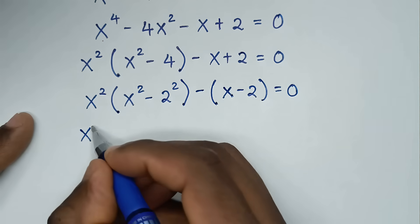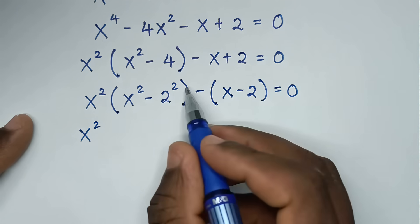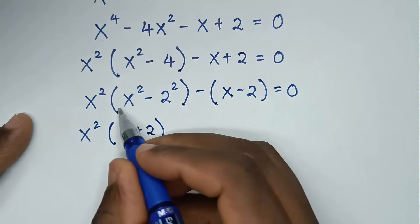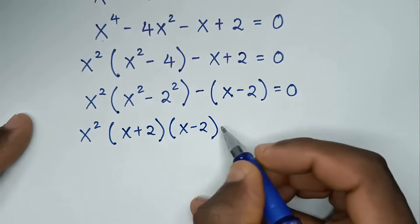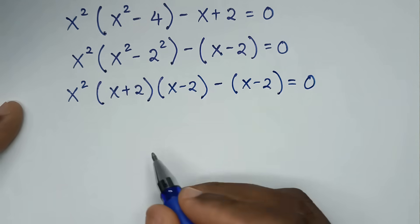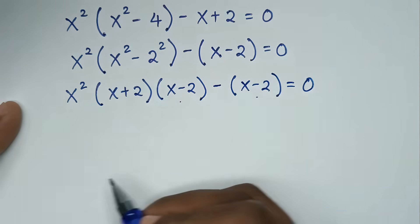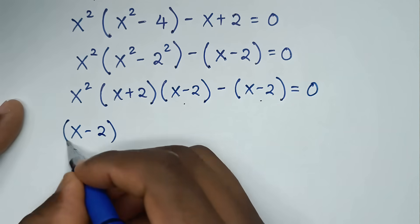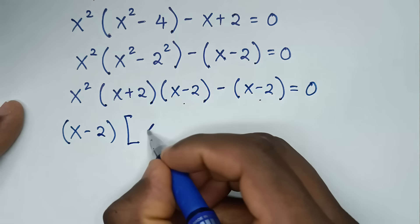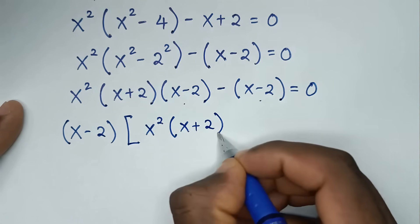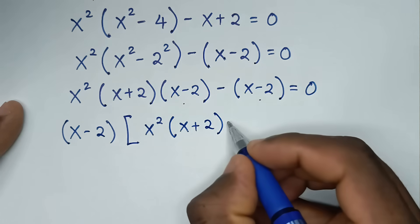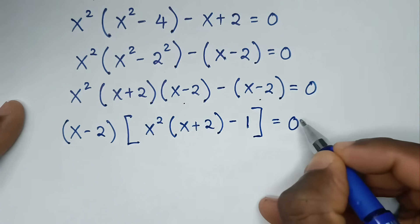Then here it will be x², and x² minus 2² is difference of two squares, so this is x plus 2 bracket, x minus 2 bracket, minus x minus 2 bracket, is equal to 0. Then from here, x minus 2 is common, so we'll take x minus 2 out of bracket: x²(x + 2) divided by x minus 2 is x²(x + 2), then minus x minus 2 divided by x minus 2 is minus 1 bracket, is equal to 0.